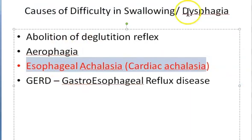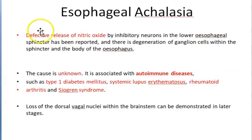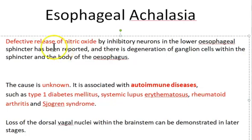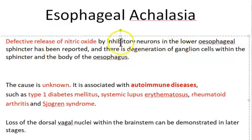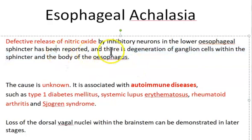The term for difficulty in swallowing is dysphagia. Now, why is the sphincter failing to relax? Because there is defective release of nitric oxide by the neurons in the lower esophageal sphincter. The inhibitory neurons in the lower esophageal sphincter are defectively releasing nitric oxide. Hence there is no relaxation of these muscles, so the sphincter remains very tight.